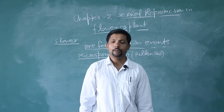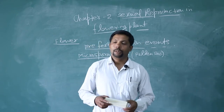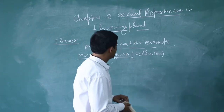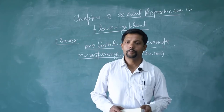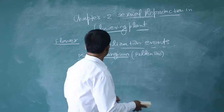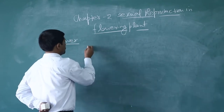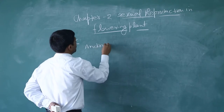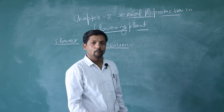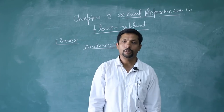The male reproductive part of the flower is called androecium. We are going to discuss the structure of the male reproductive part. Before this, one term is there: floriculture. The commercial production of flowers is called floriculture. Androecium is a composite term used for all the stamens, so the unit of androecium is a stamen.